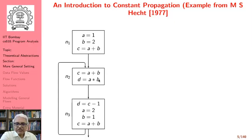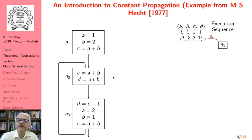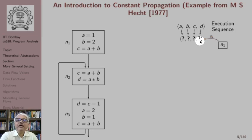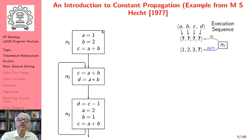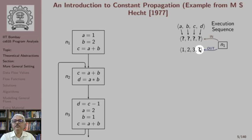Let us look at execution traces for this program. Initially, we do not know the values of variables. At the entry of n1, we do not know the values of a, b, c, d — shown as a 4-tuple. At the end of basic block n1, we know a has been assigned 1, b has been assigned 2, and c is their sum. So the tuple is (1, 2, 3, ?), where d remains unknown. The control then reaches the entry of n2, where the values remain the same, and at the exit of n2, c is still 3 and d becomes 2.